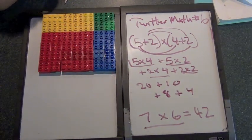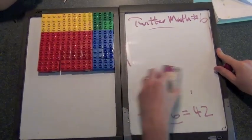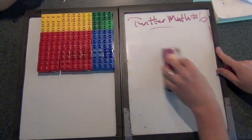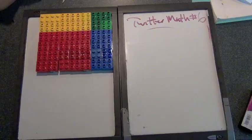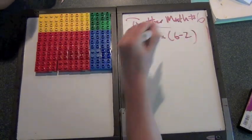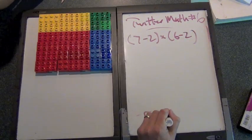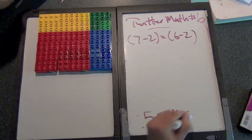But now let's take a look at a slightly different problem, which is going to be seven minus two times six minus two. Now what is seven minus two? It's five. What is six minus two? Four. And what's five times four? Twenty.